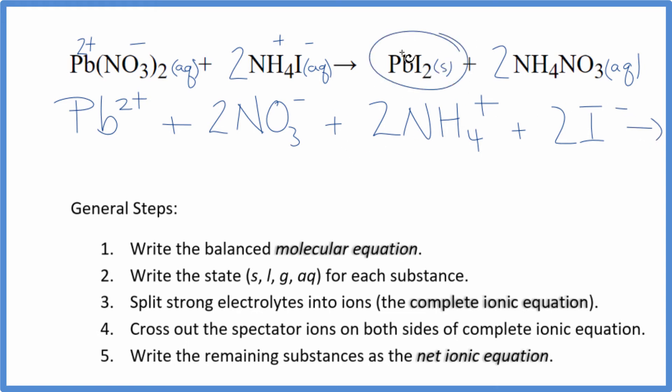For the products, we don't split solids apart. So we're just going to keep this PbI2 together as a solid. And then we have a positive and a negative. So 2 ammonium ions and 2 nitrate ions. So this is the complete ionic equation.